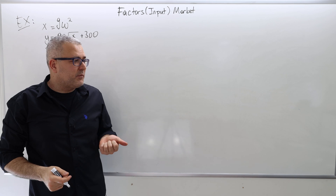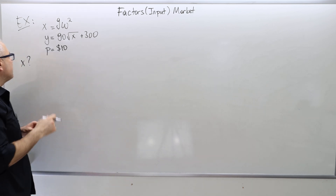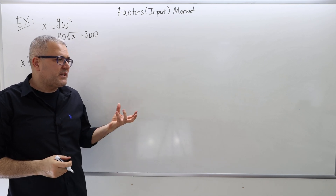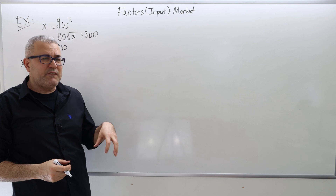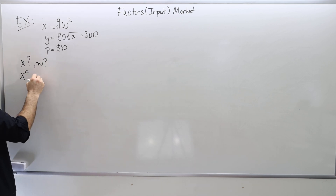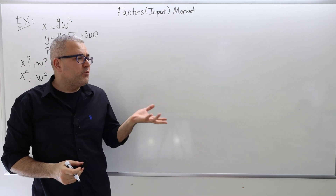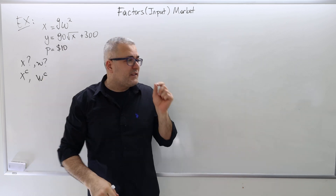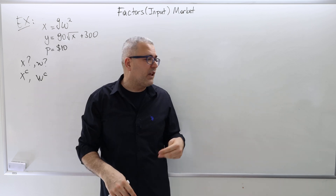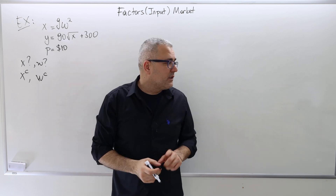Part A asks: how many workers does the mining company hire — the optimal X? Part B asks: what is the wage W in this town? Part C may be a bit challenging: suppose the government wants to reduce unemployment to zero. This is asking us to find the competitive equilibrium input level and competitive equilibrium wage level — the point where supply equals demand, so unemployment will be zero.